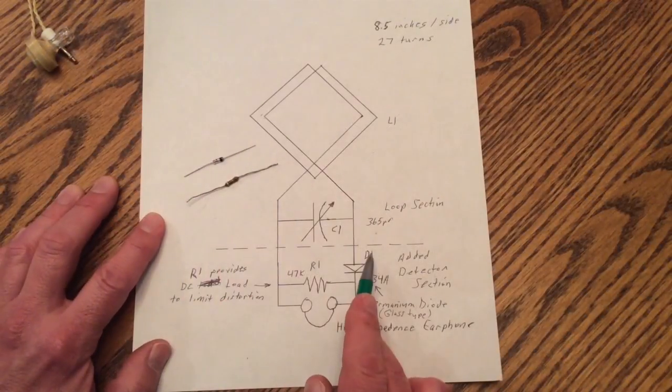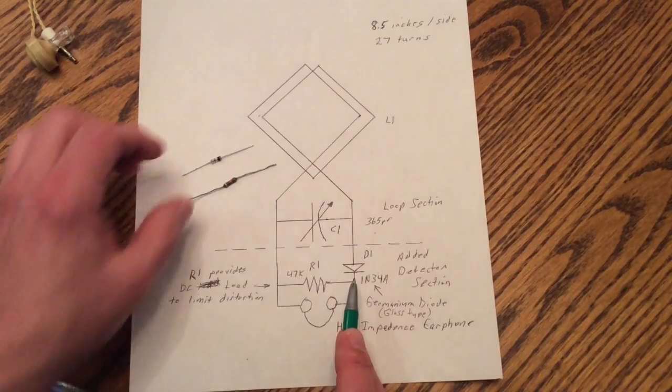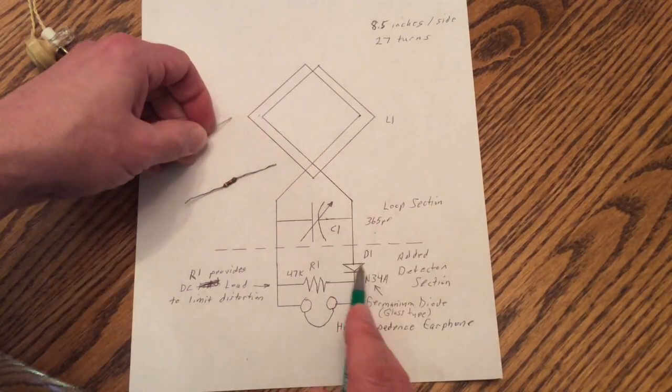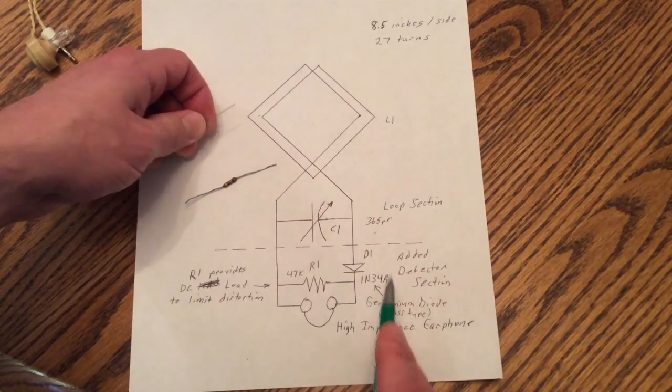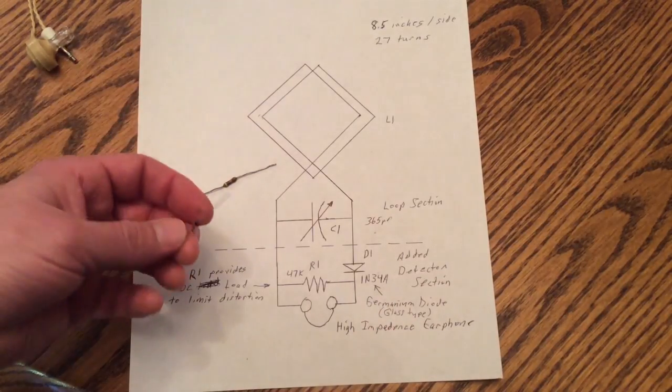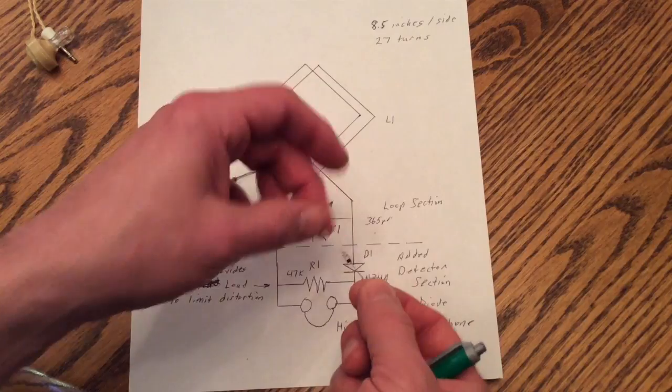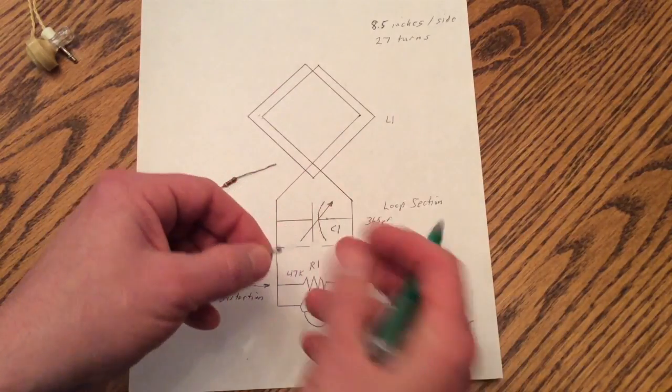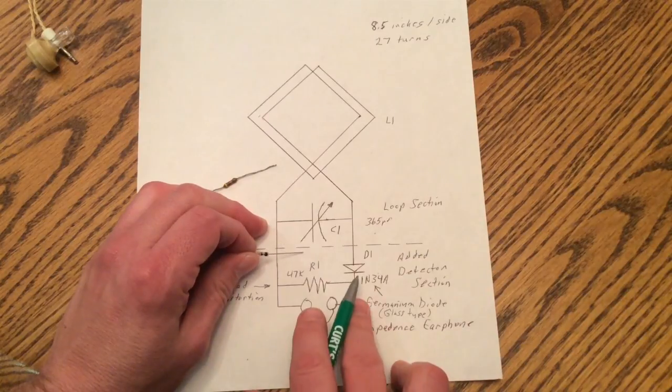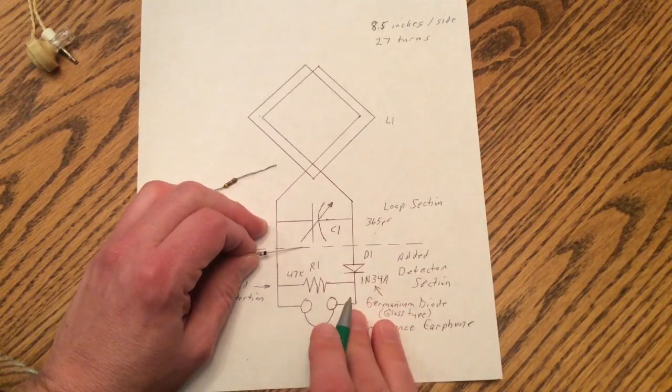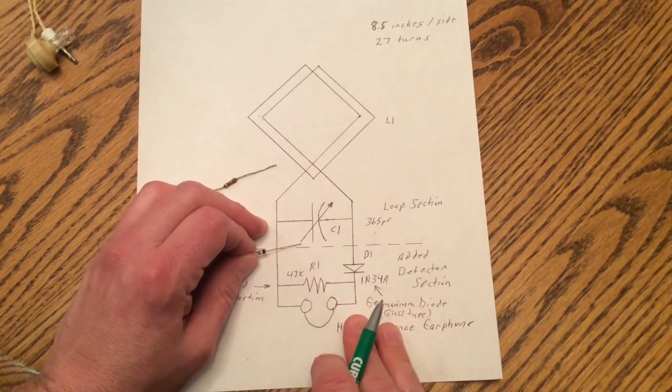So everything below the dotted line is my simple circuit that I added to turn this into a crystal set. So I added a germanium type diode, a glass type, 1N34. And if you use any other type of diode, this is not going to work for you. It does have to be a germanium type diode to be able to decode the signal and demodulate the signal.